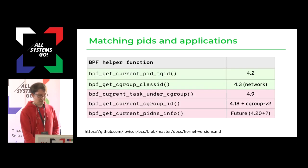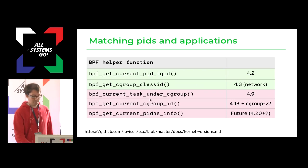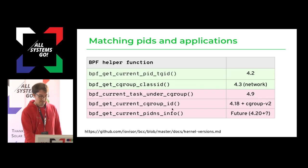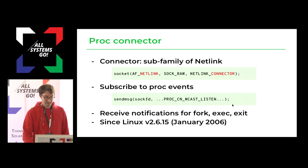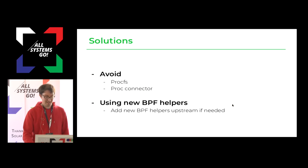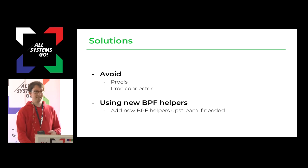I would recommend not using the PROC Connector for this. With newer kernels there are now BPF helper functions more suitable for the task — for example, getting the cgroup ID, available since kernel 4.18. In general, I recommend using newer facilities or improving the kernel if they don't exist.